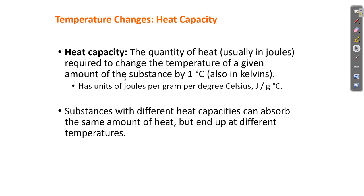Heat capacity is the amount of heat required to change the temperature of a given amount of substance by 1 degree C. If I'm heating up water and the temperature goes from 20°C to 21°C, how much heat did I have to put in to make it go up by 1 degree? That's the heat capacity — how much heat you have to put into something before its temperature changes by one degree. Some substances change temperature quickly with added heat; others change very slowly. They have different heat capacities.